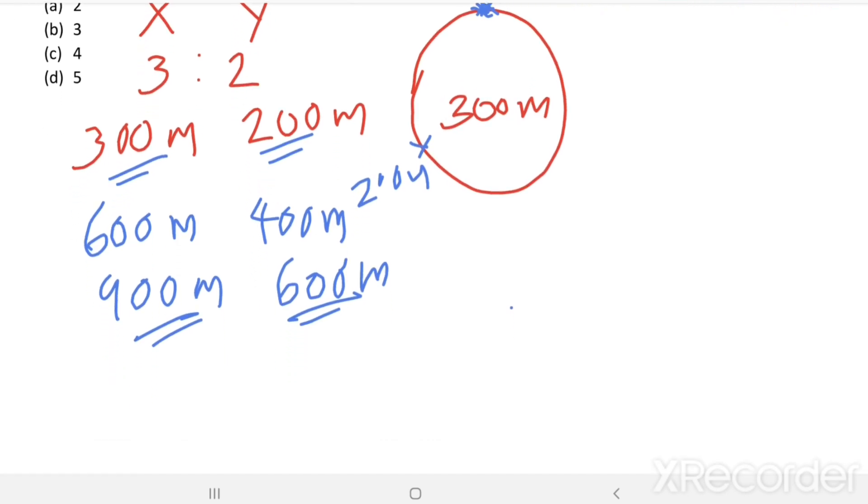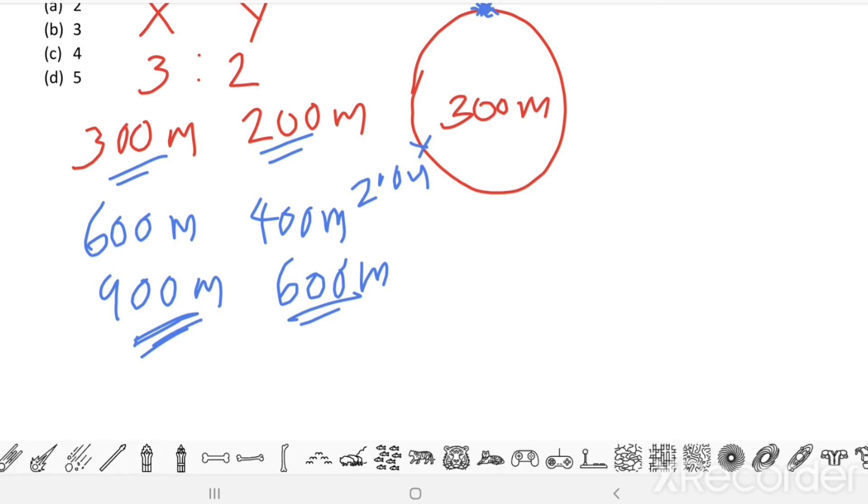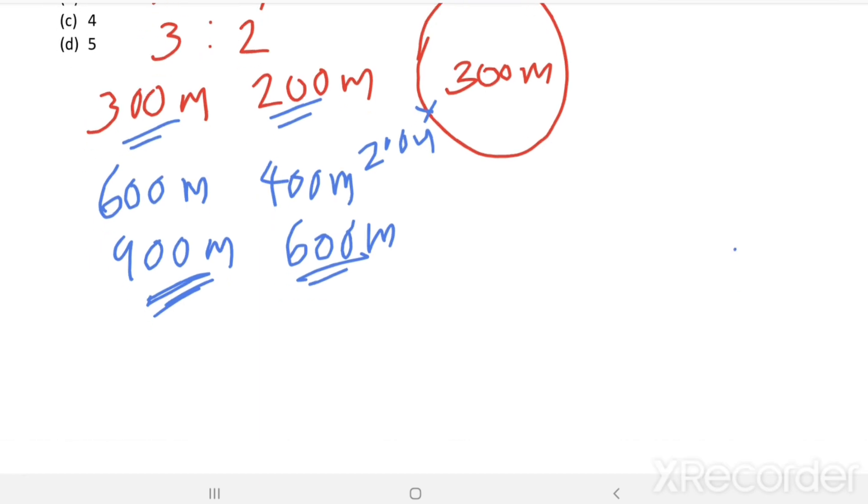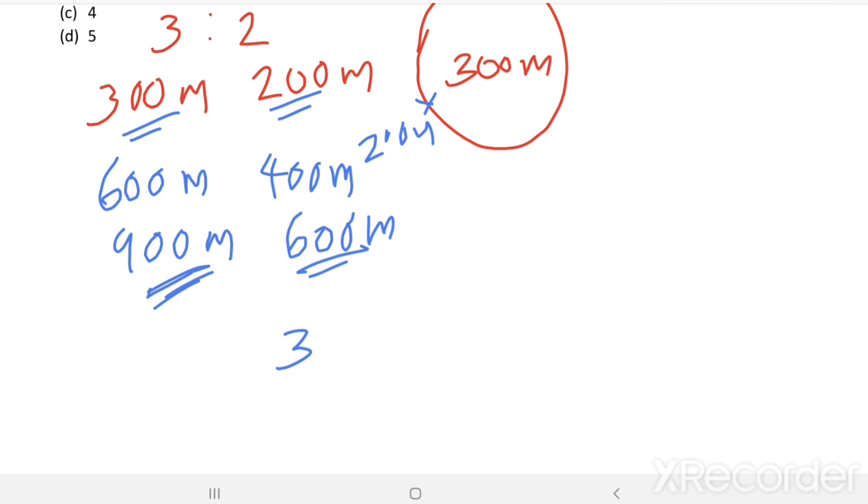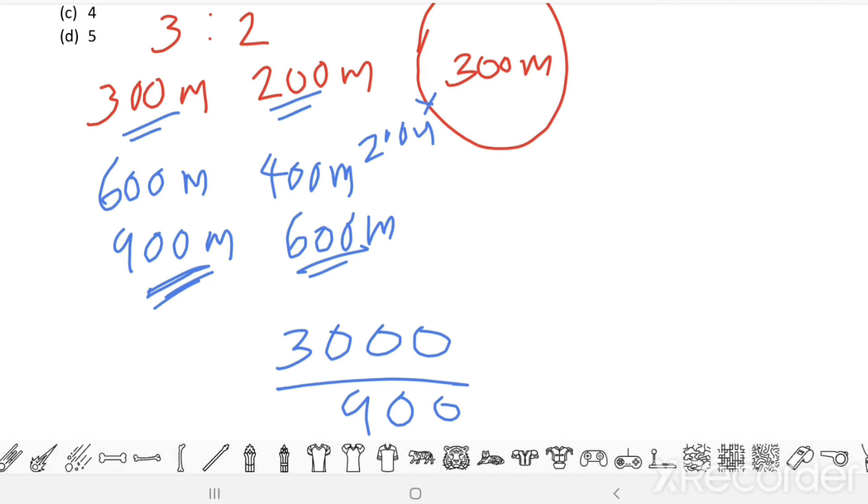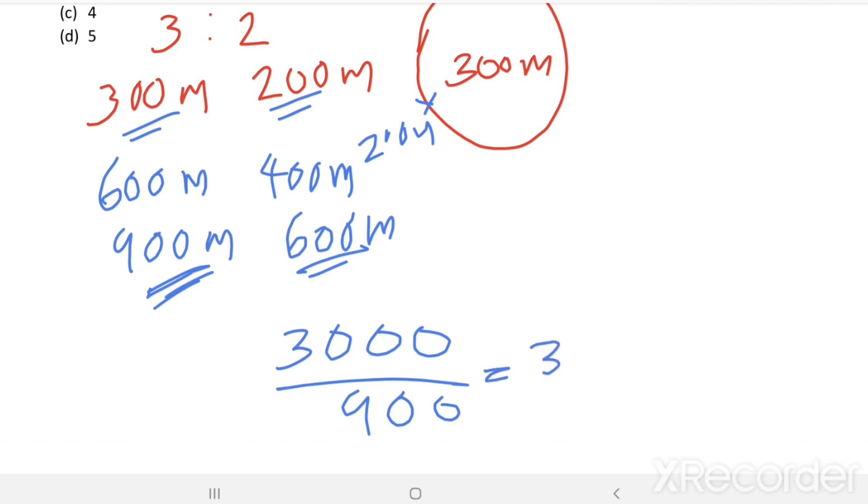So we can say after running 900 m, X passes Y. So in the entire course of the 3000 m race, X passes Y 3000 divided by 900 times. This is equal to 3.